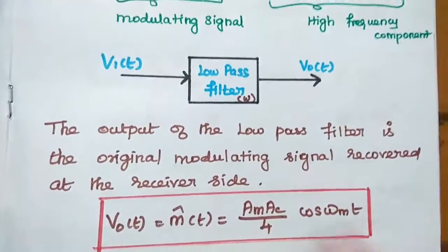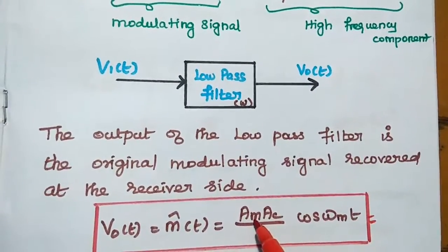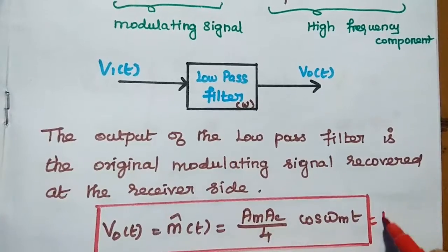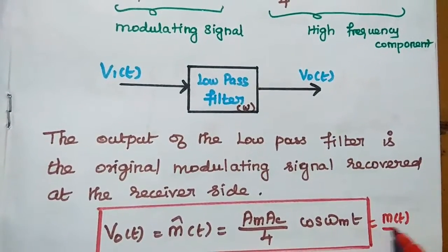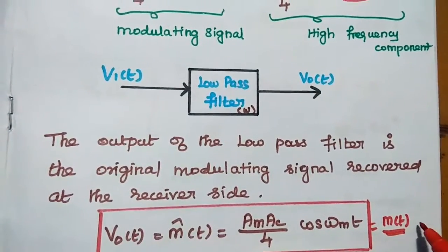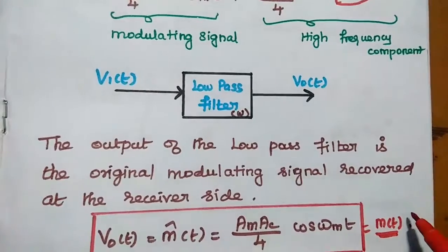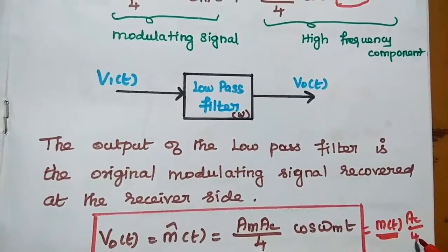From this we can write that A_M · cos(ωM·t) is nothing but m(t), the message signal, multiplied by A_C / 4. So here we can get the message signal as the output.